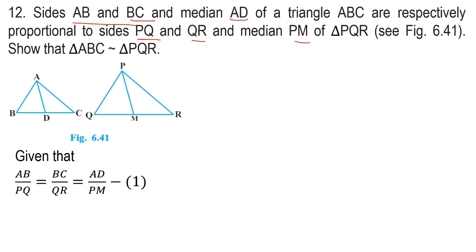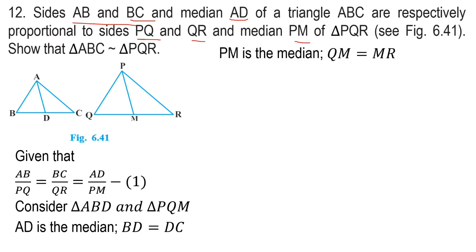Now we have two triangles, ABD and PQM. AD is the median. If we have a triangle and a vertex connects to the opposite side's midpoint, then we have the median. Then D is the midpoint, which means BD is equal to DC. Similarly, PM is the median, so QM is equal to MR.